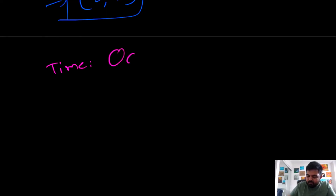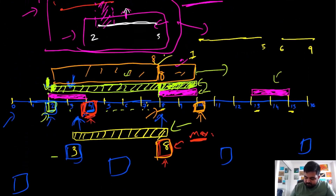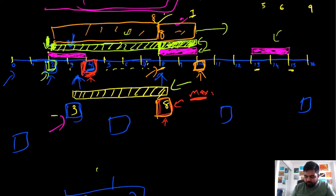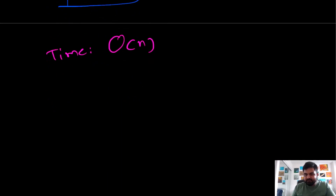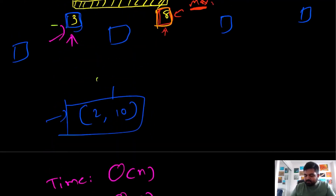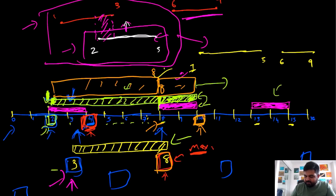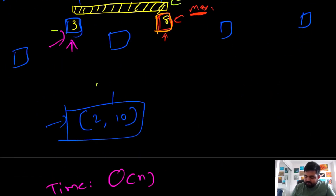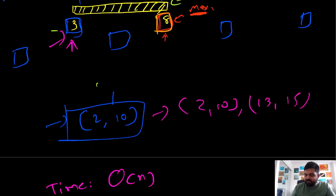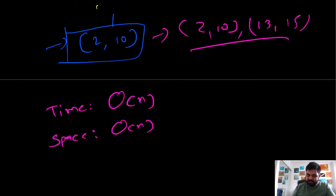The time complexity in this case is O(n), because at any point for this new interval we need to find the entry point and check for the conflicting scenario. For space complexity, it is also O(n) because we will have to create a new array of intervals to return — a new 2D array, for example containing two to ten and thirteen to fifteen as the answer.